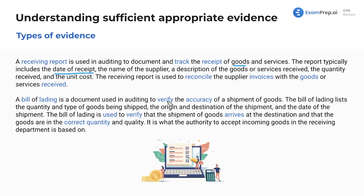Next we have the bill of lading, a document used to verify the accuracy of a shipment of goods. It lists the quantity and type of goods being shipped, including the origin, destination, and date of shipment. This verifies that goods arrive at the destination in the correct quantity and quality — if the bill says 10 pieces and only 9 arrive, someone may have stolen one. The receiving department bases its authority to accept incoming goods on the bill of lading, and the auditor uses it to verify transaction accuracy.